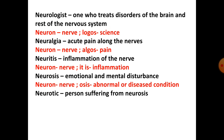Next we have neurologist. Jab aapko brain se related koi bhi problem hoti hai, nerve se related koi bhi problem hoti hai — ya entire nervous system se related koi bhi problem hai — toh us case mein aap us doctor ko consult karoge. Woh hai neurologist. Neuron ka matlab nerve aur logos ka matlab science. Aur science of nerve ko kehte hain hum neurology. Next we have neuralgia. Neuron ka matlab nerve aur algos ka matlab pain — yaani ke nerve mein hone wala pain, acute pain along the nerves. Usse hum kehte hain neuralgia.